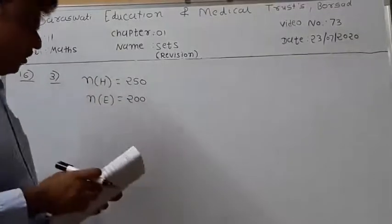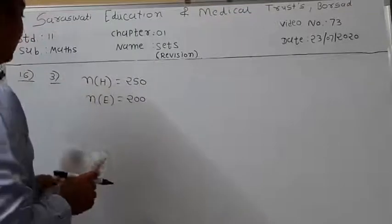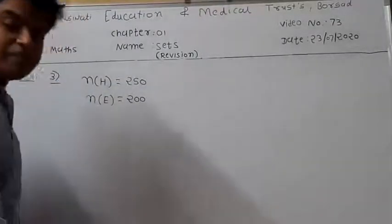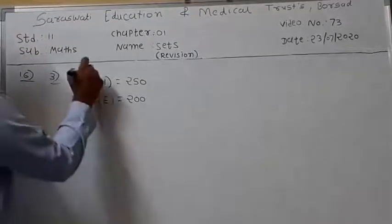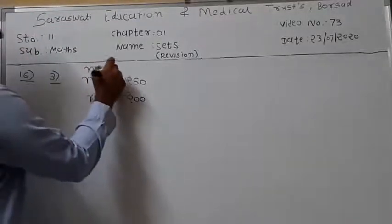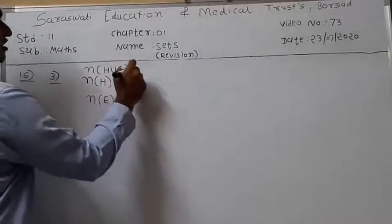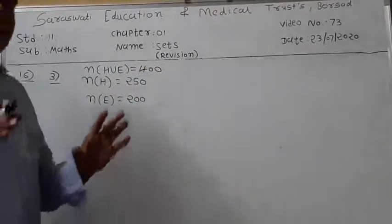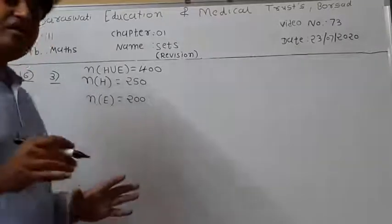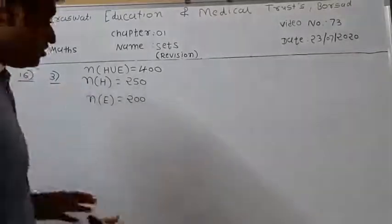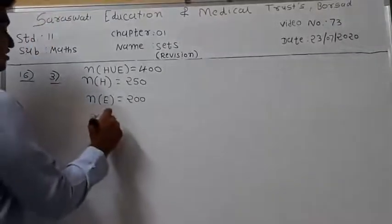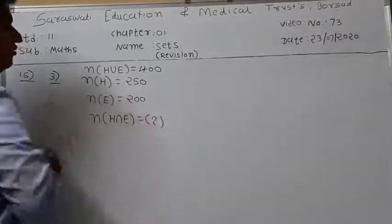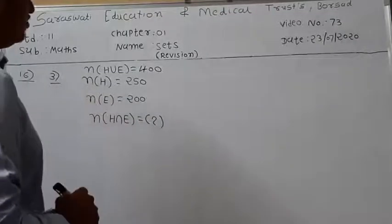How many people can speak both Hindi and English? In a group of total 400 people, N of H union E is equal to 400. Our question is to find N of H intersection E.